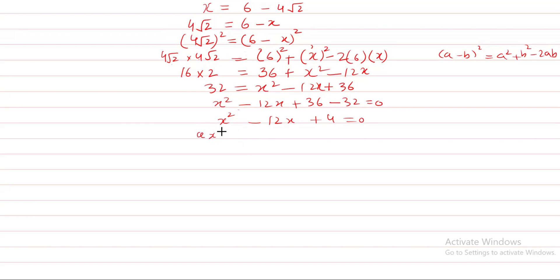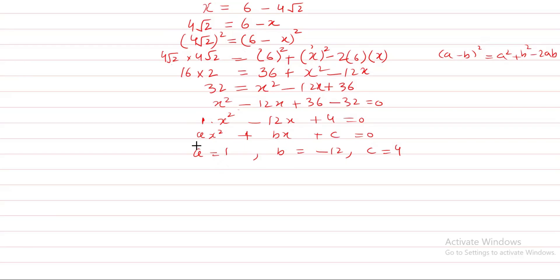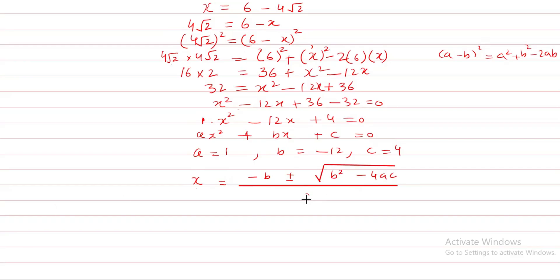The general form of a quadratic equation is AX squared plus BX plus C equal to 0. Comparing, we get A equal to 1, B equal to minus 12, and C equal to 4. To solve the quadratic equation, we use the quadratic formula: X equals minus B plus or minus square root of B squared minus 4AC, all over 2A.